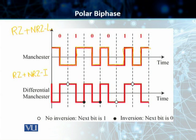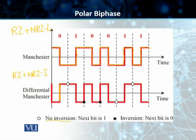Before we discuss the advantages and disadvantages of these two biphase techniques, let's discuss differential Manchester as well. Differential Manchester combines return to zero and non-return to zero invert. In this scheme, a transition is made in the middle of each bit. But it also follows the NRZI principle, which means there is no inversion if the next bit is one, and there is an inversion if the next bit is zero.